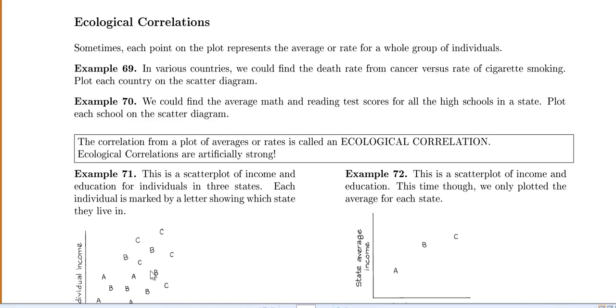So for example, we could find the death rate from cancer versus the rate of cigarette smoking and we could plot each country on the scatter diagram. Or example 70, we could find the average math and reading test scores for all the fifth high schools in the state and plot each school on the scatter diagram.